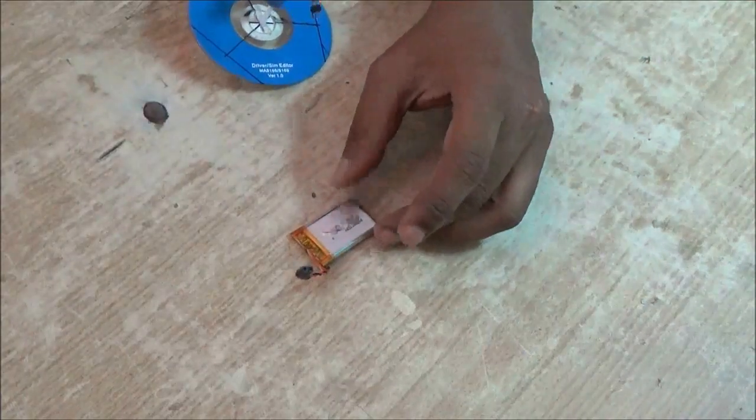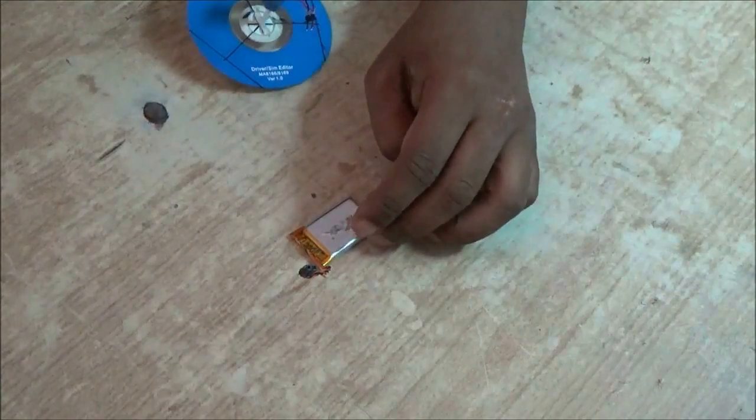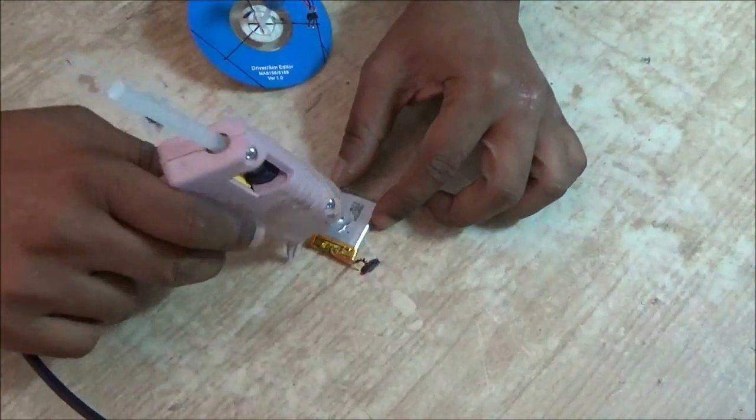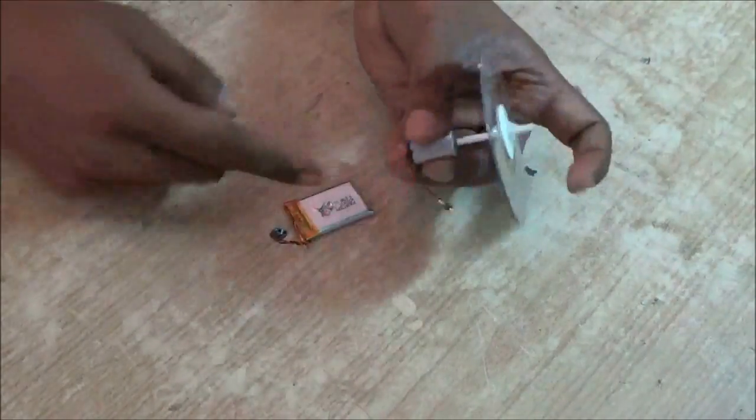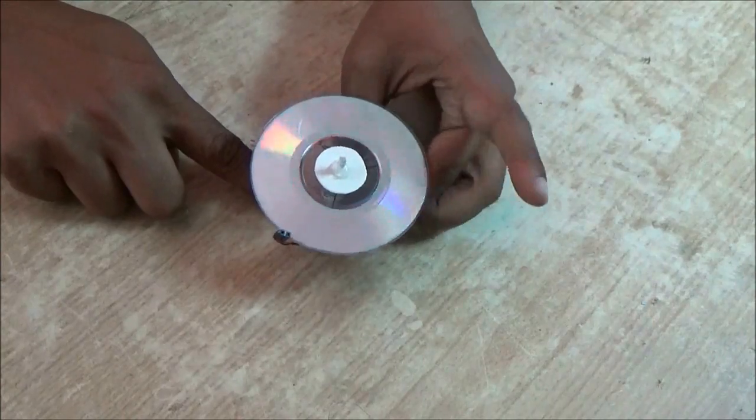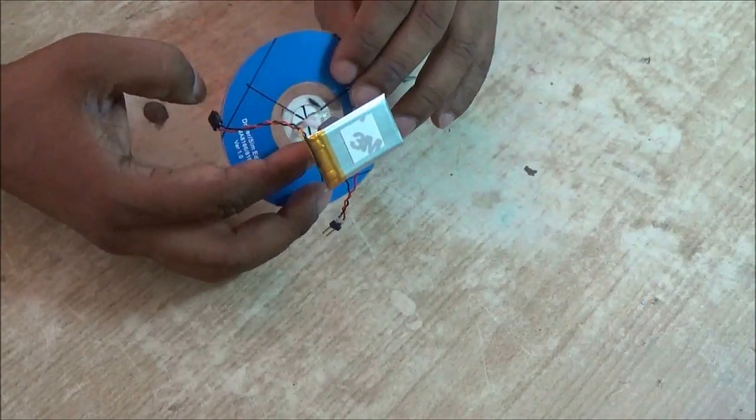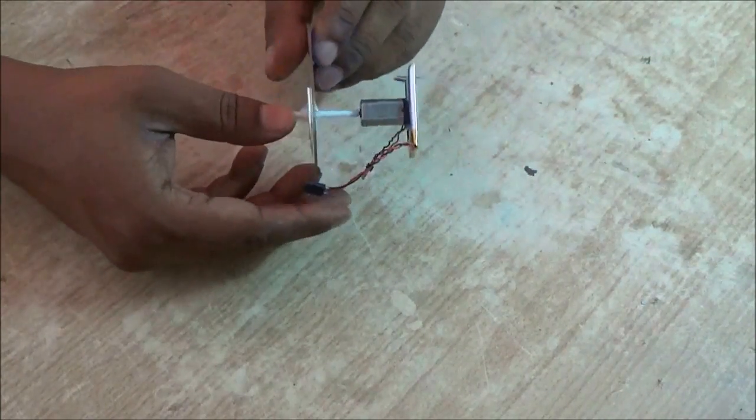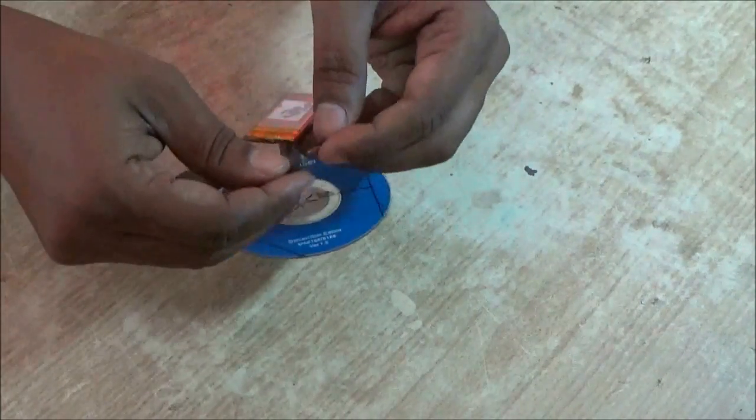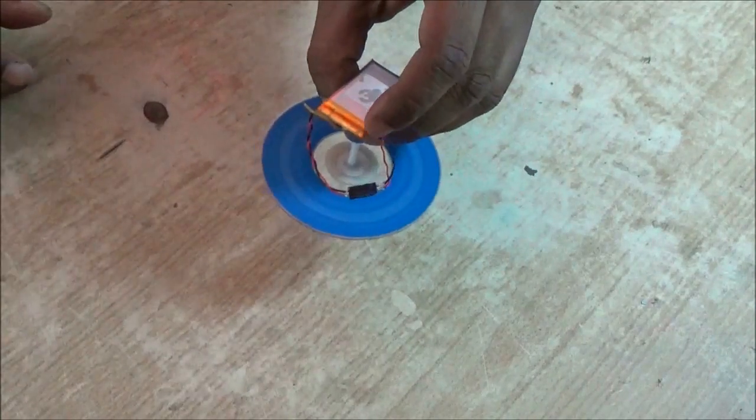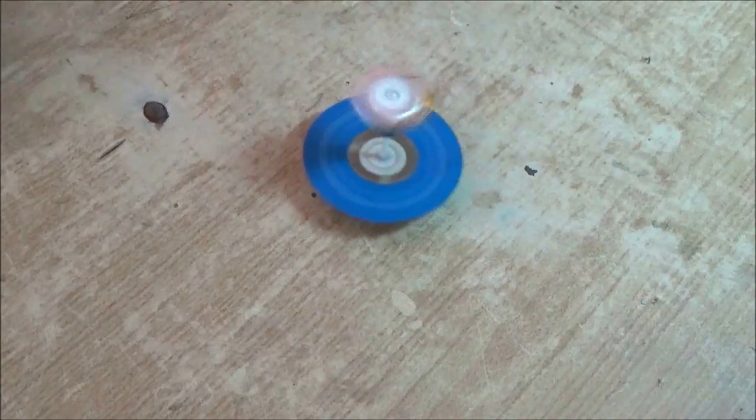Now you need a small battery. I have taken a 3.5-volt LiPo battery. Glue the motor at the center of the battery like this. Now connect the battery to the motor and just place it like this. See, it's a top continuously rotating as long as the battery power is there.